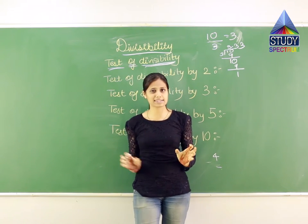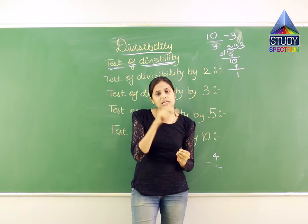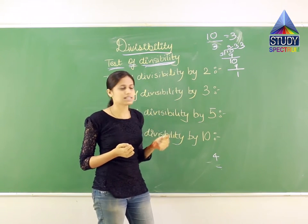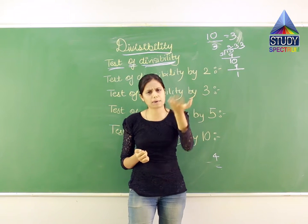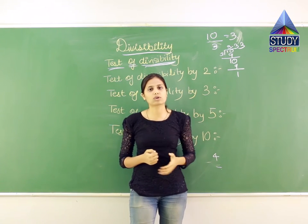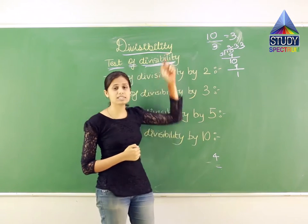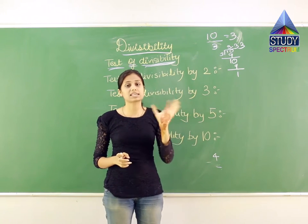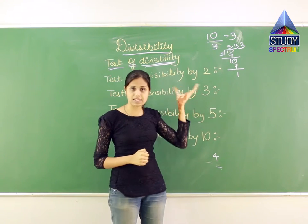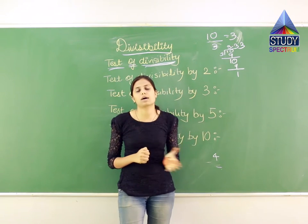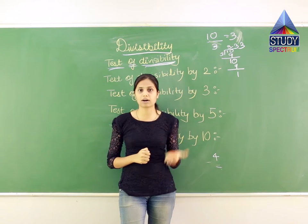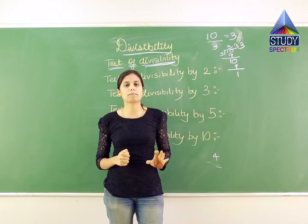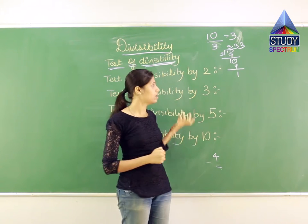So this much time we spent checking just the number 10. In an exam, checking every number's table like this is not practical. When you have 3-digit, 4-digit, or 5-digit numbers, it is not that simple to calculate. So there is a method known as divisibility — it gives you an approach to find which number is divisible by which. Let us understand this method in the next steps.